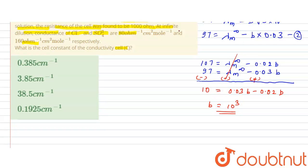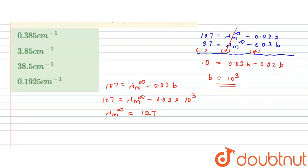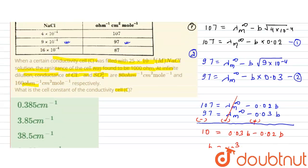Now substituting b = 1000 back into equation 1 to find the molar conductivity at infinite dilution: 107 = λ∞ − 0.02 × 1000, which gives 107 = λ∞ − 20. Therefore λ∞ = 127. So the molar conductivity at infinite dilution is 127.